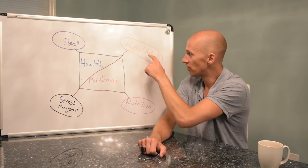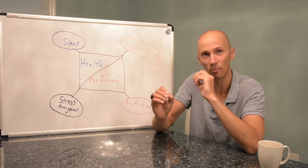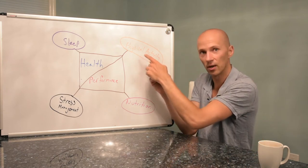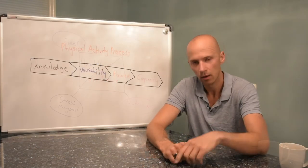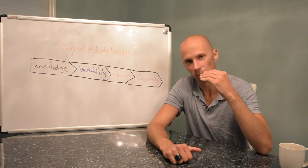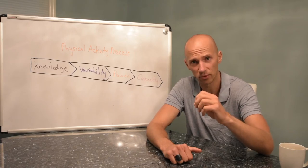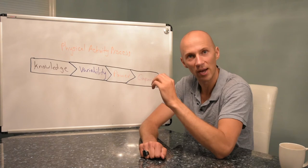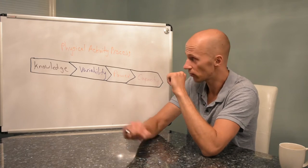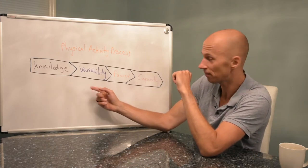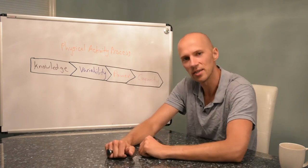We're going to talk about physical activity in particular today and what are the pieces, the steps, and components necessary to maximize this area so our individuals can reach their health and performance goals. From a physical activity standpoint, there is a particular process that we utilize. We have four domains in that process that could potentially be rate limiting steps: knowledge, variability, power, and capacity. Let's go into detail with each.